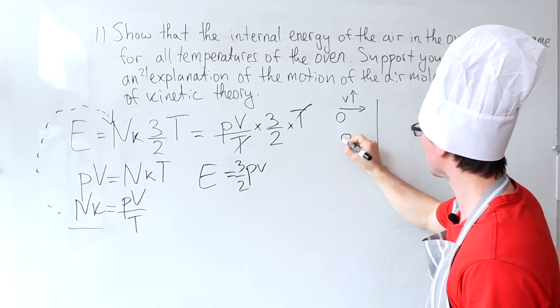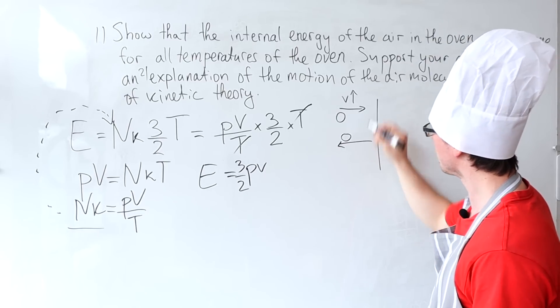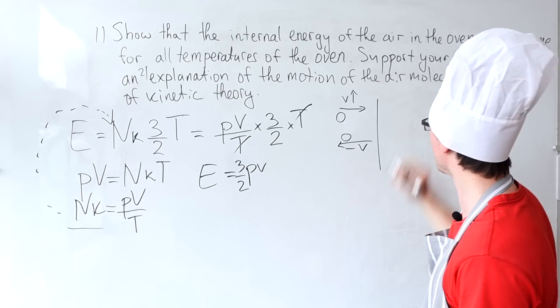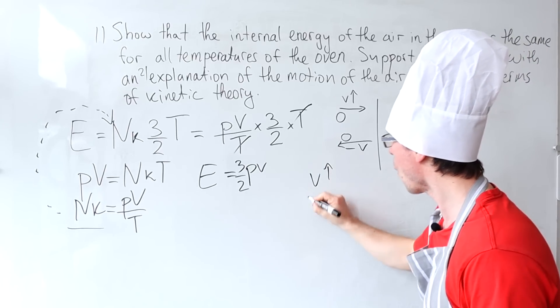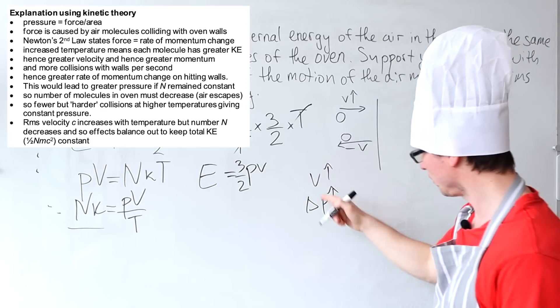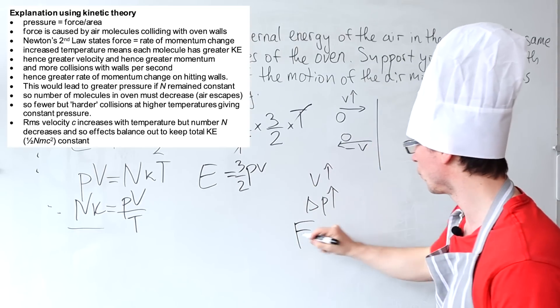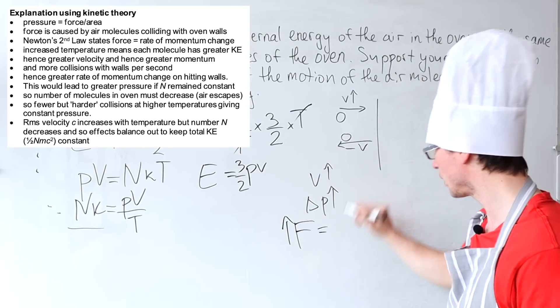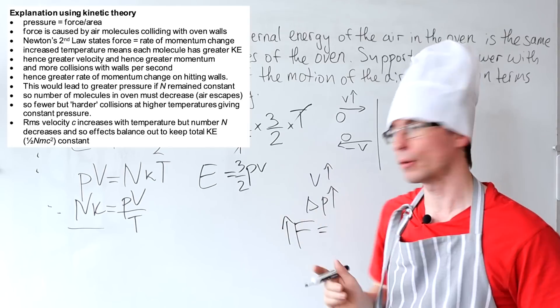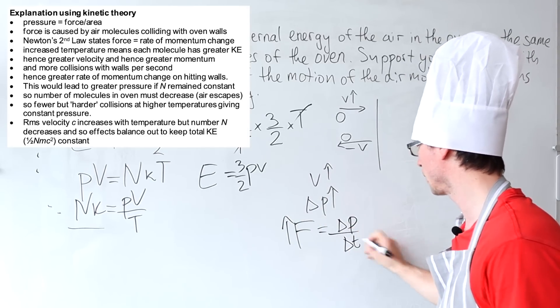Because it will collide with the sides of the container, this means that its change of momentum will also be greater. Because the change of momentum, delta P will be greater, the amount of force that's exerted onto the wall will also be greater in the opposite direction to the force of the molecule. But this will be equal to delta P over delta T.